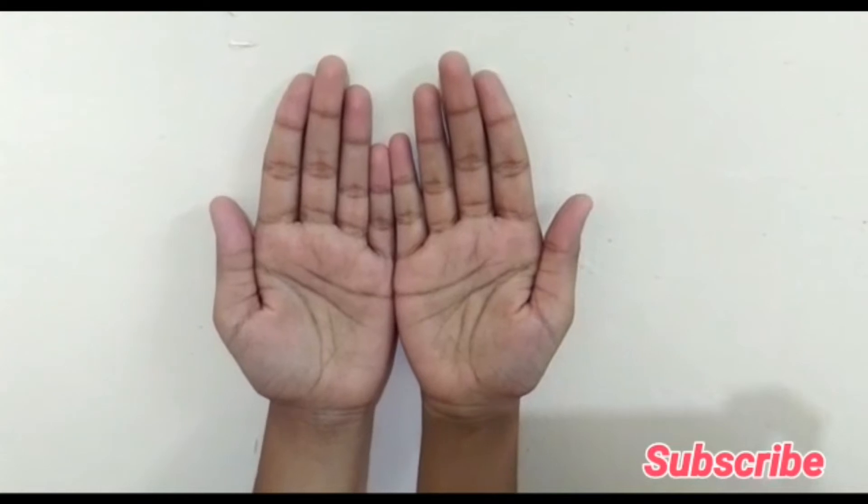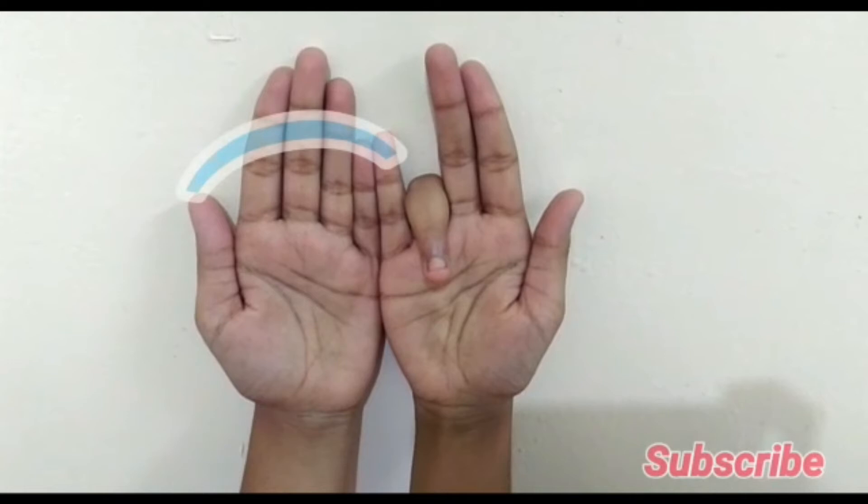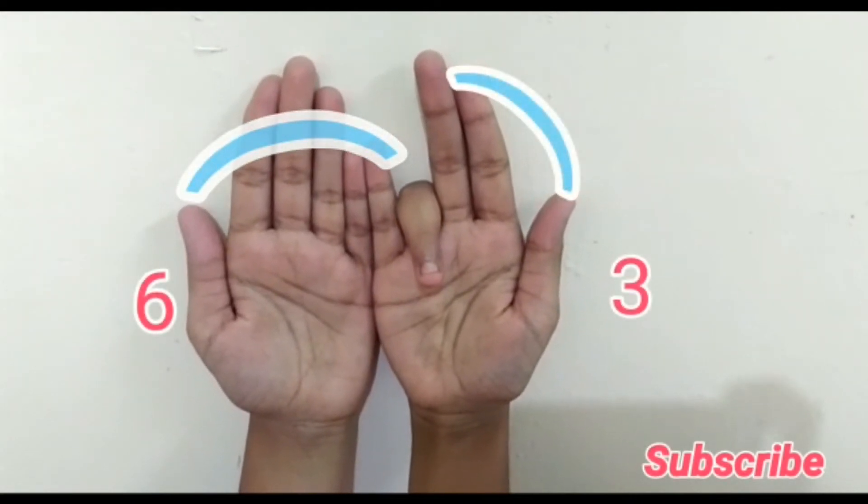7 into 9. So fold your seventh finger. Towards the left side of the folded finger it's 6 and towards the right side it's 3. So 7 times 9 are 63.